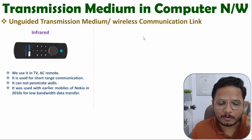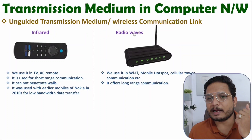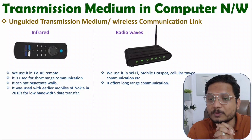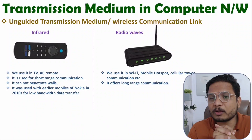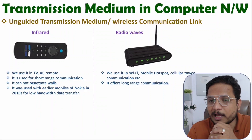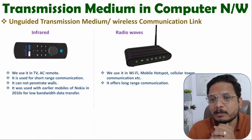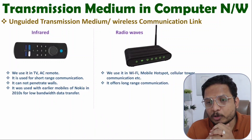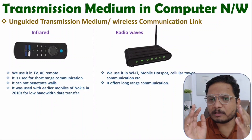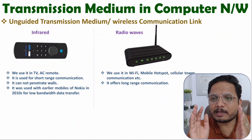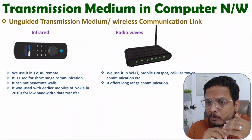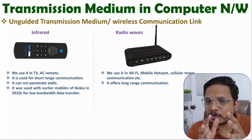In computer networks, we primarily use radio waves. Radio waves are used with Wi-Fi, cellular towers, and mobile hotspots. Cellular towers offer long-range communication of several kilometers, and some Motorola mobiles now even support satellite communication. Radio waves provide high bandwidth — for example, with 5G networks you can have extremely high bandwidth available on your mobile.